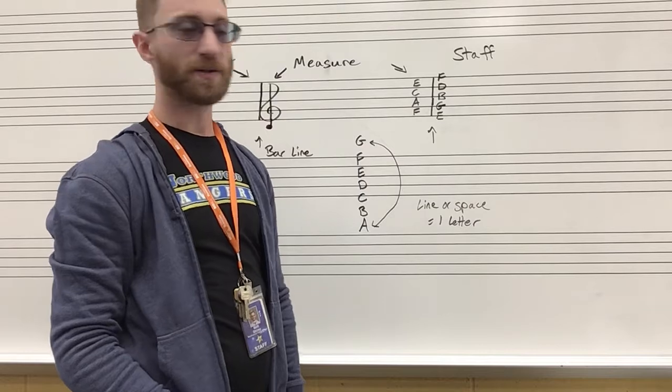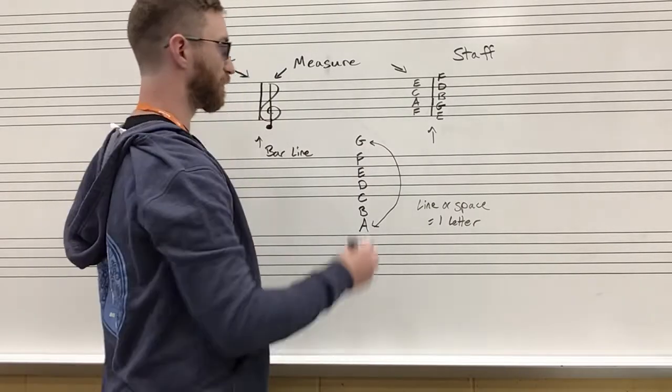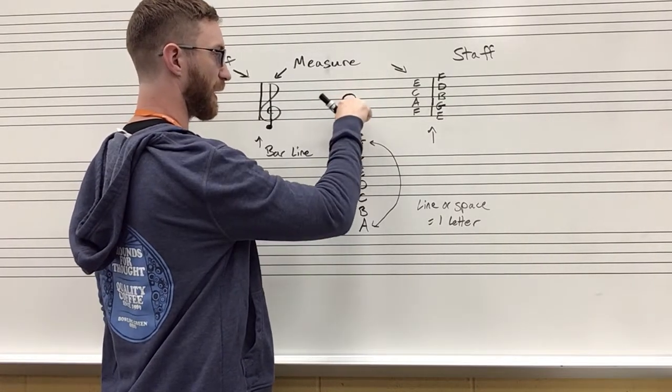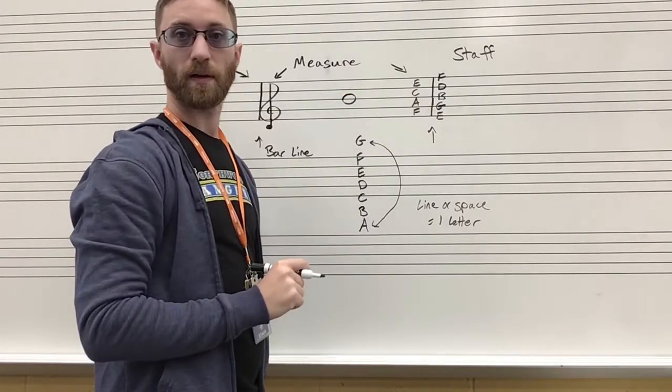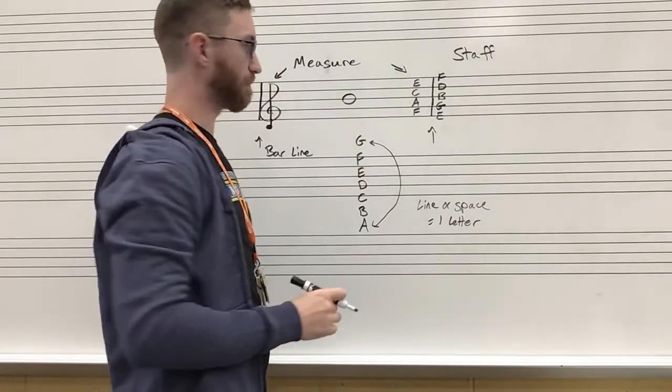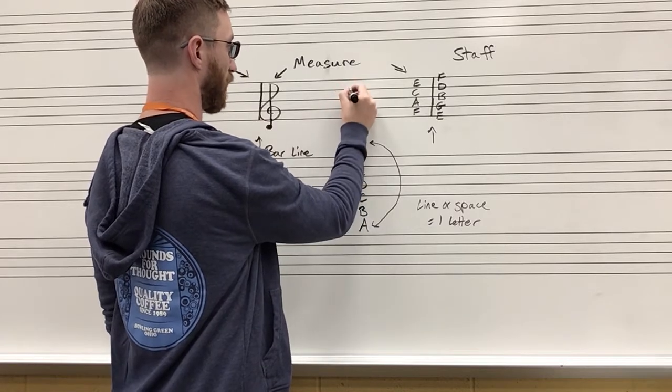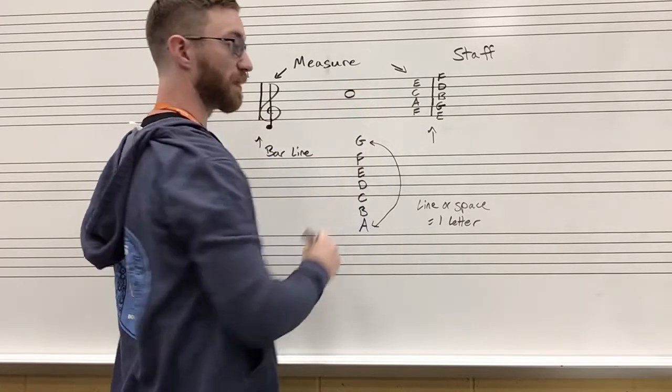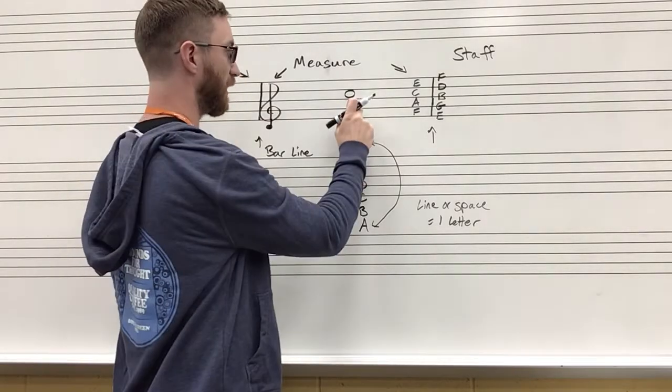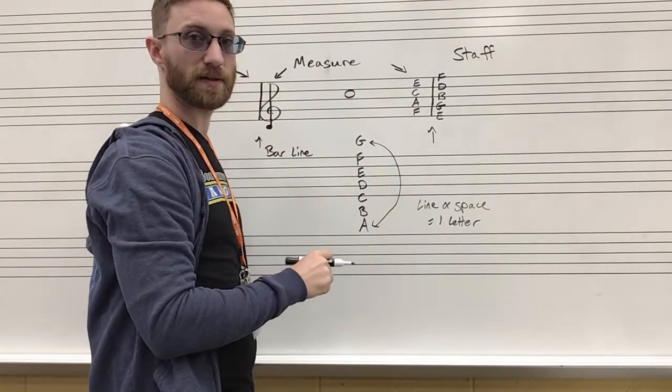If you remember those, it helps when determining what note you are on. So if I were to draw a note here over the line and I remember Every Good Boy, I know I'm on B. If I draw a note on the space, the third space, space spells FACE, F-A-C-E, I have the letter C.